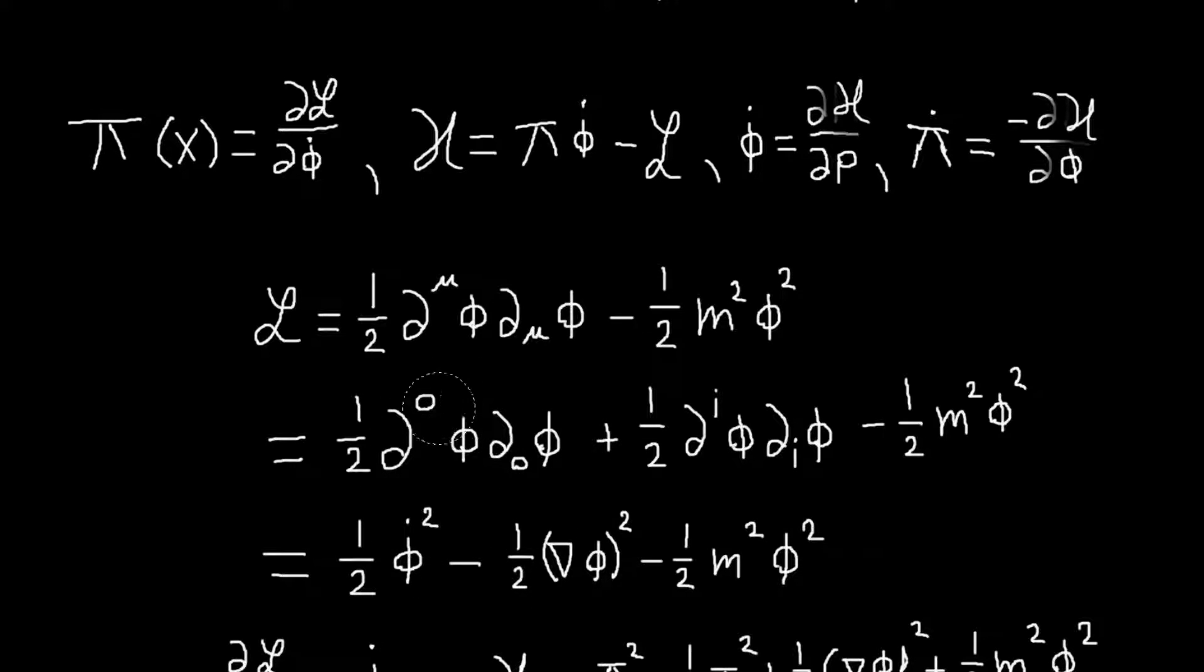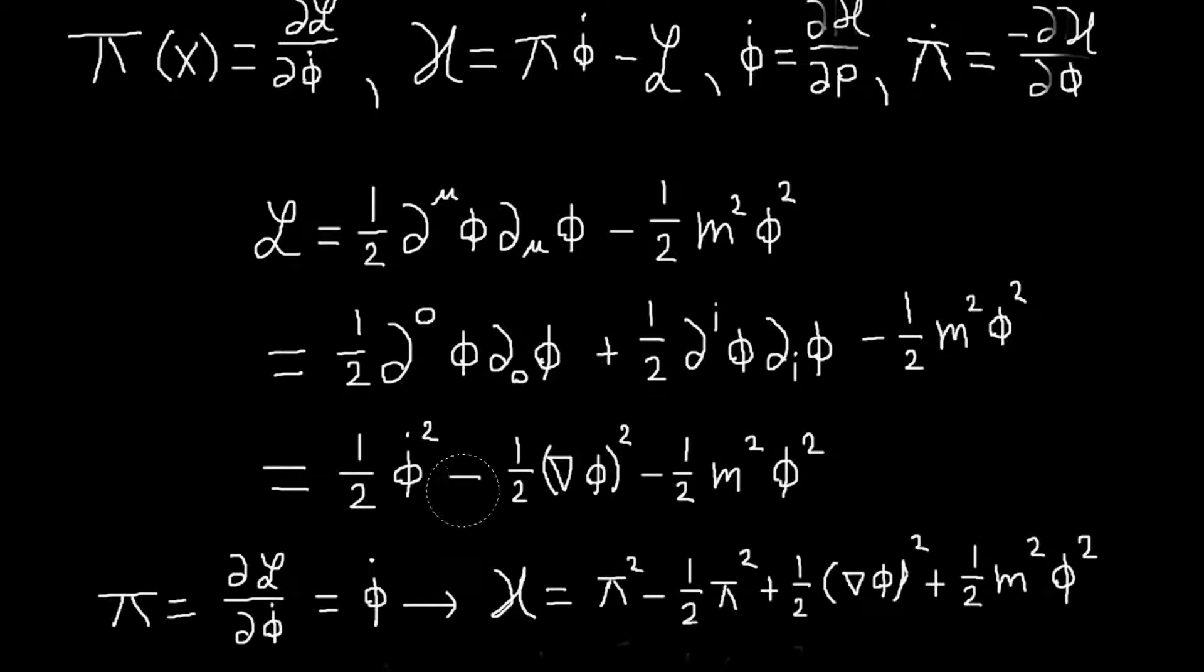And then rewriting that. So d zero up and down are both just time derivatives. So I'll write this as phi dot squared. And the lower i is gradient, the upper i is minus gradient. This is minus one-half gradient phi squared. This term is still here. So this is our Lagrangian.